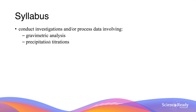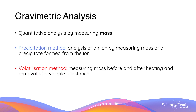In this video we'll be talking about gravimetric analysis. Gravimetric analysis is a quantitative technique that measures the mass of a particular substance. There are two types of gravimetric analysis: precipitation and volatilization. In the precipitation method, the quantity of an ion is measured by measuring the mass of a precipitate that can be formed from the ion. In contrast, in the volatilization method, the mass of a mixture or compound is measured before and after heating.